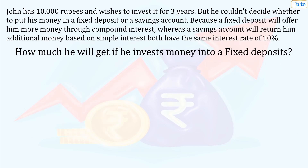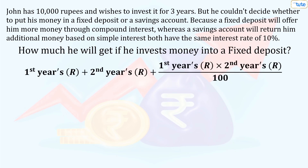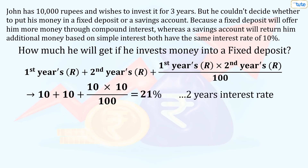The compound interest formula is quite tricky, so let's learn a simple trick to calculate compound interest. Concentrating on John's problem, we will add the rate of interest of the first year and second year, and then add the product of these rates divided by 100. Here the interest rate for both years is the same, which is 10%. So the interest rate for 2 years will be 21%.